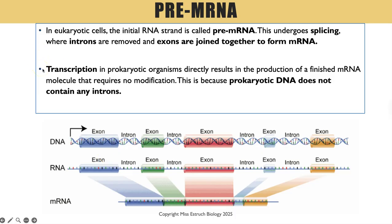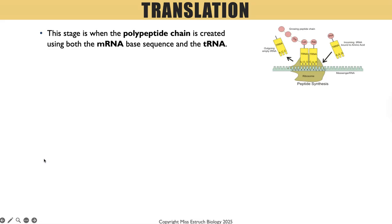Transcription in prokaryotic organisms does not have that splicing stage. When transcription occurs in prokaryotes such as bacteria, they create the final finished mRNA molecules straight away, because prokaryotic DNA doesn't contain introns. Now that we have our mRNA molecule, the next step is translation — this is when the polypeptide chain is created, using messenger RNA (made during transcription) and transfer RNA (tRNA), which brings the specific amino acids.